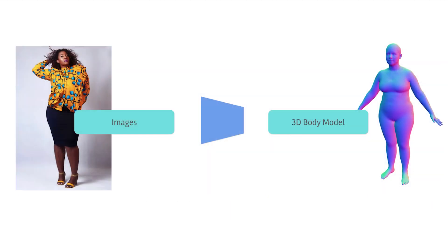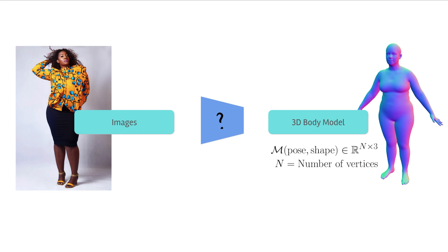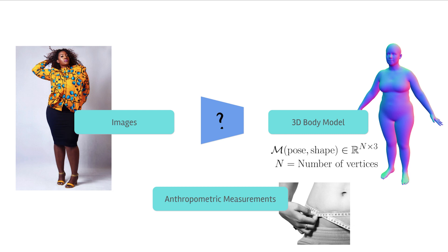Ideally, to train a 3D body shape regressor, we'd have a dataset of images in the wild with ground truth 3D scans or the parameters of a body model like SMPL-X. Think of a function that takes pose and shape parameters as input and outputs a 3D mesh. Unfortunately, obtaining thousands of 3D scans paired with images in the wild is impractical. One option is to use sparse anthropometric measurements such as height or circumference measures. However, taking them precisely requires practice and they're also difficult to collect for images in the wild.